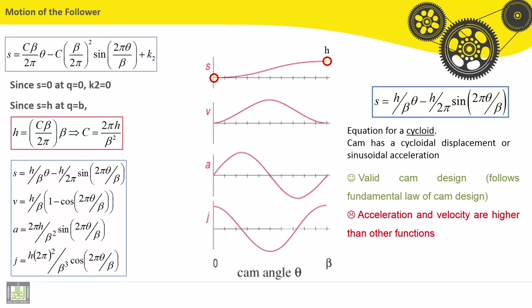To completely define the function, we find the k₂ constant. Since position equals zero at θ = 0, then k₂ equals zero. Since position equals zero at θ = 0, we can find the h and c constants. Position, velocity, acceleration, and jerk are fully defined.